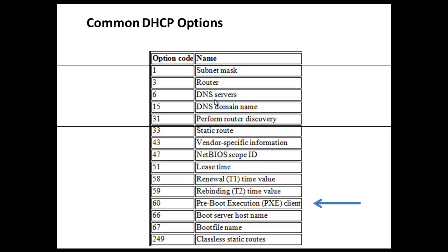We want to concentrate on a particular option here, option 60, which is the PXE option — pronounced PXE — standing for pre-boot execution. We want to take a look at why option 60 is needed on the network and what we do with that option 60 from the DHCP server.